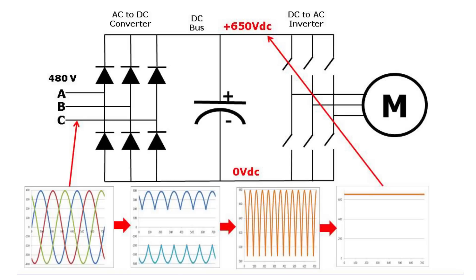The DC that comes out of the converter is rather choppy and not very smooth, so we put in a capacitor in order to clean that DC up. The capacitor is like a reservoir in a plumbing circuit, and that reservoir smooths everything out and gives us a nice clean DC.